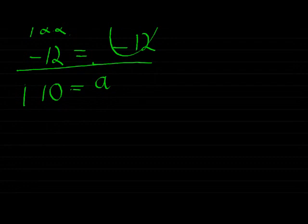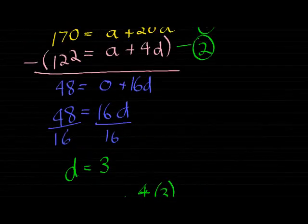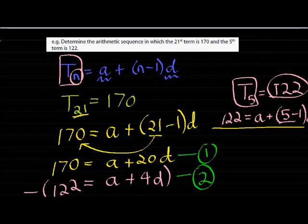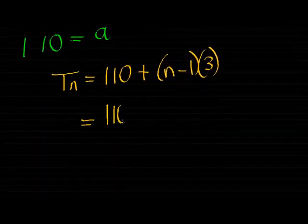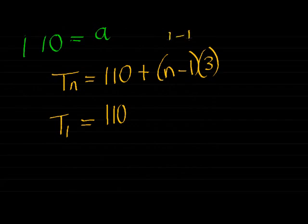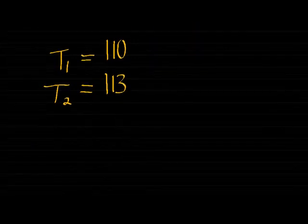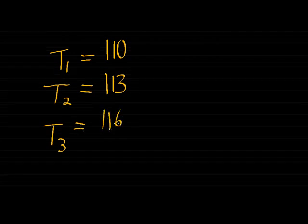We've got our general term then. If we were to write it, it would be Tn is 110, which is alpha, plus n minus 1 times our constant difference, 3. That was the question: determine the arithmetic sequence. We've done so. If we wanted to, we could give the first three terms. That would be 110. T1 is 1, because n will be 1. 1 minus 1 will be 0, so I add 3 zero times. When T is 2, I add 3 once, which gives me 113. When T is 3, I add 3 twice, so 110 plus 2 times 3 gives me 116, and so forth.